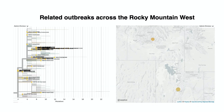For the Rocky Mountain West, there have also been several introductions. Zooming in on the map, we see a well-resolved transmission chain making its way across Idaho. Notably, this set of cases is flanked by a cluster of cases from Utah, demonstrating a close relationship between these two outbreaks.